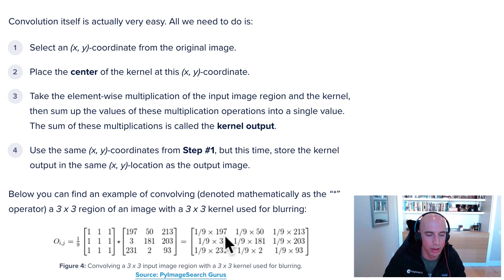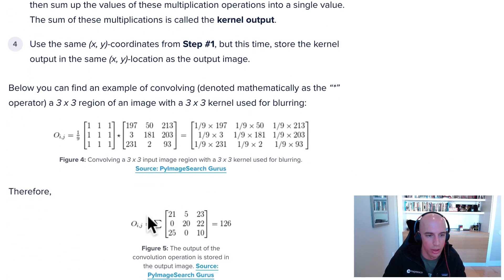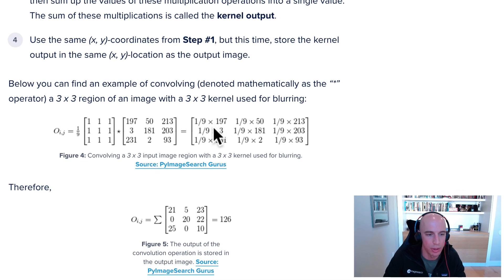For each element in that matrix, we're going to multiply by one divided by nine—so one ninth times 197, one ninth times 50, et cetera. After the matrix multiplication is done, we get these nine values out, which is just the process of doing this multiplication. We sum all of that together and that equals 126.